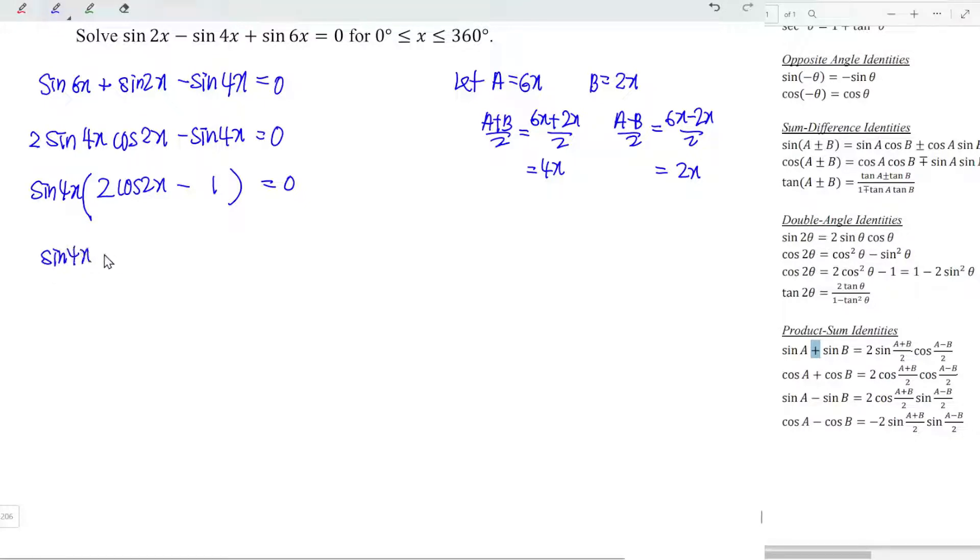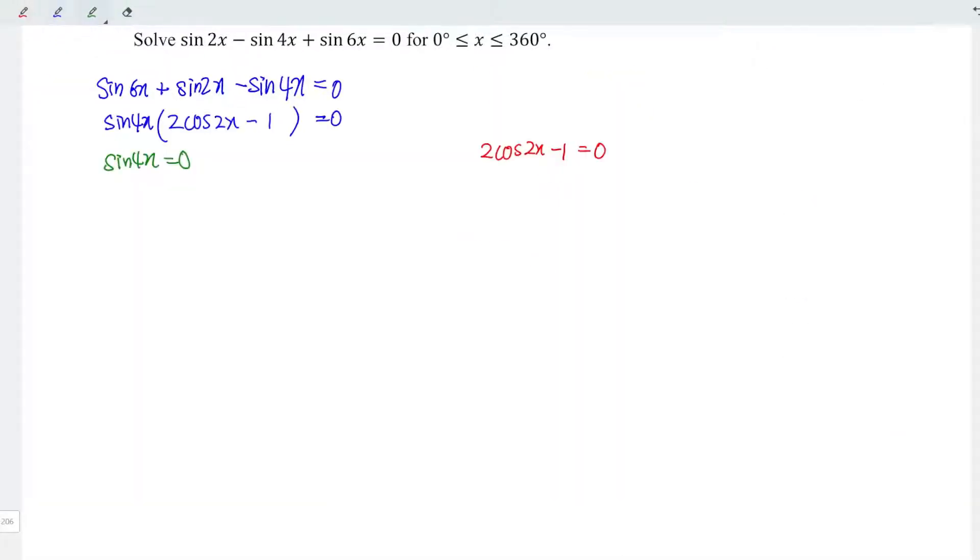Next, let's solve for the equations. If sine 4x is equal to zero, which means that 4x is equal to arcsin zero. From here we notice that x ranges from zero degrees to 360 degrees, which means that 4x should range from zero degrees to 1440 degrees.